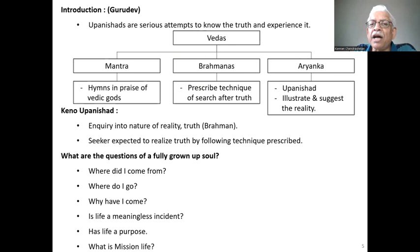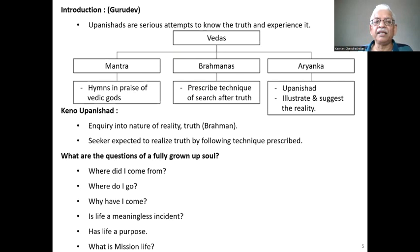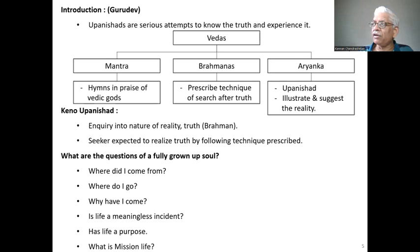Upanishads are serious attempts to know and experience the truth in oneself, and the Vedas are the sources. The Vedas are divided into the mantra portion — hymns in praise of the Vedic gods — the Brahmana portion, which prescribes the technique of searching after truth, and the Aranyaka portion. Keno Upanishad is part of the Brahmana portion — specifically it comes in the Talabhakara Brahmana, as mentioned in Shankaracharya's Bhashya.